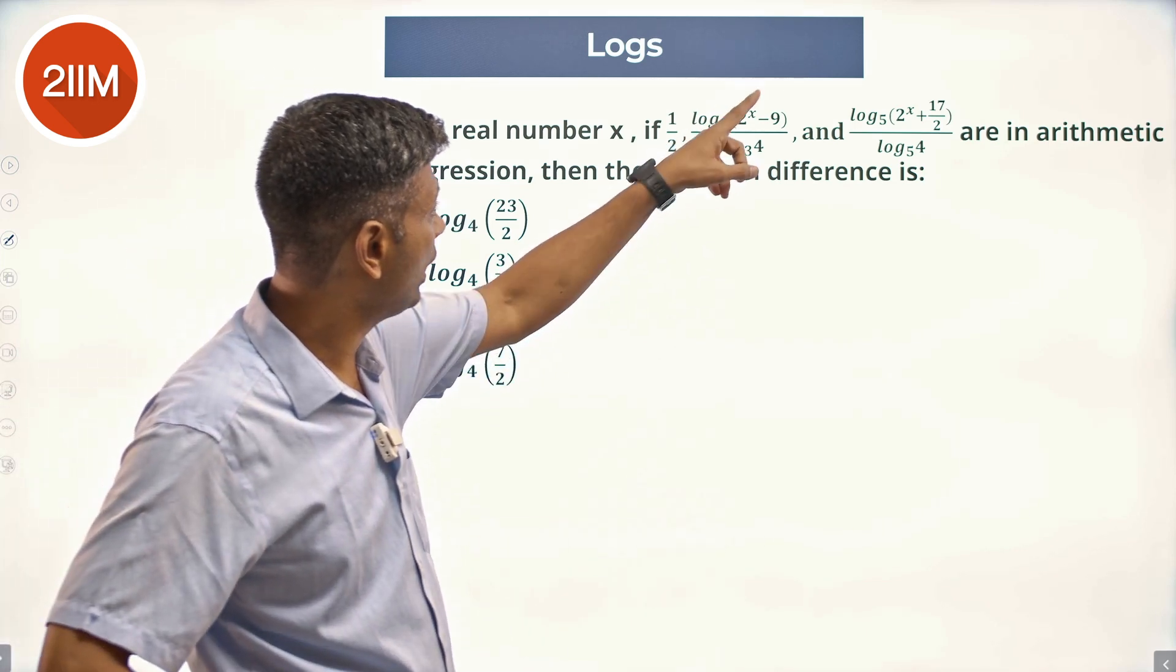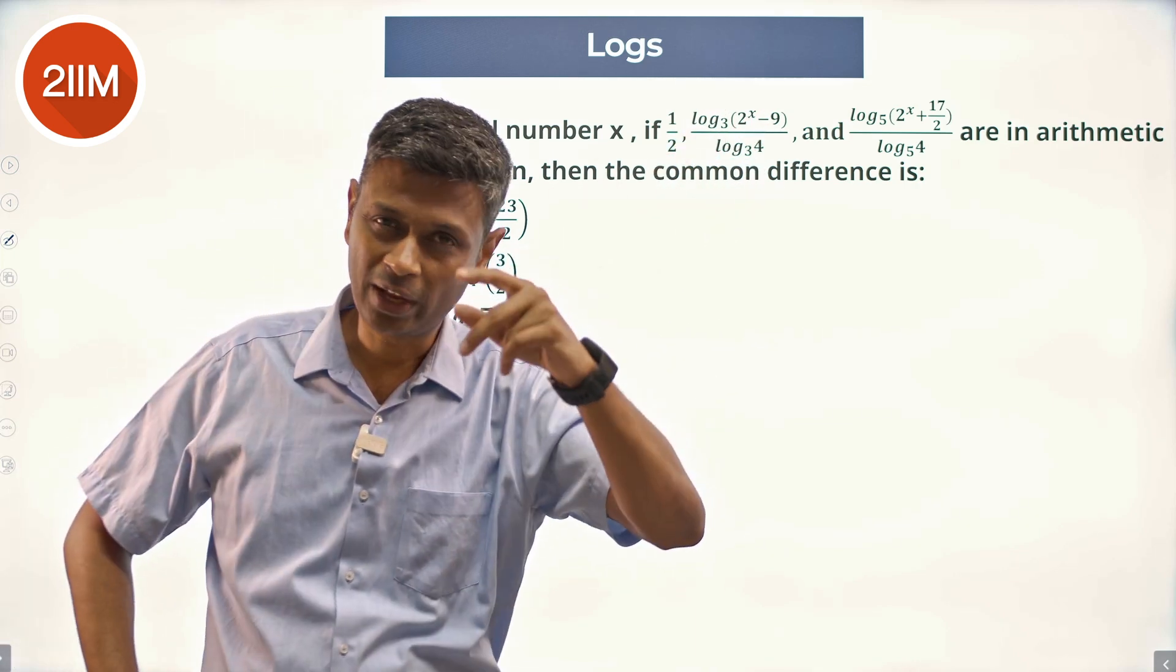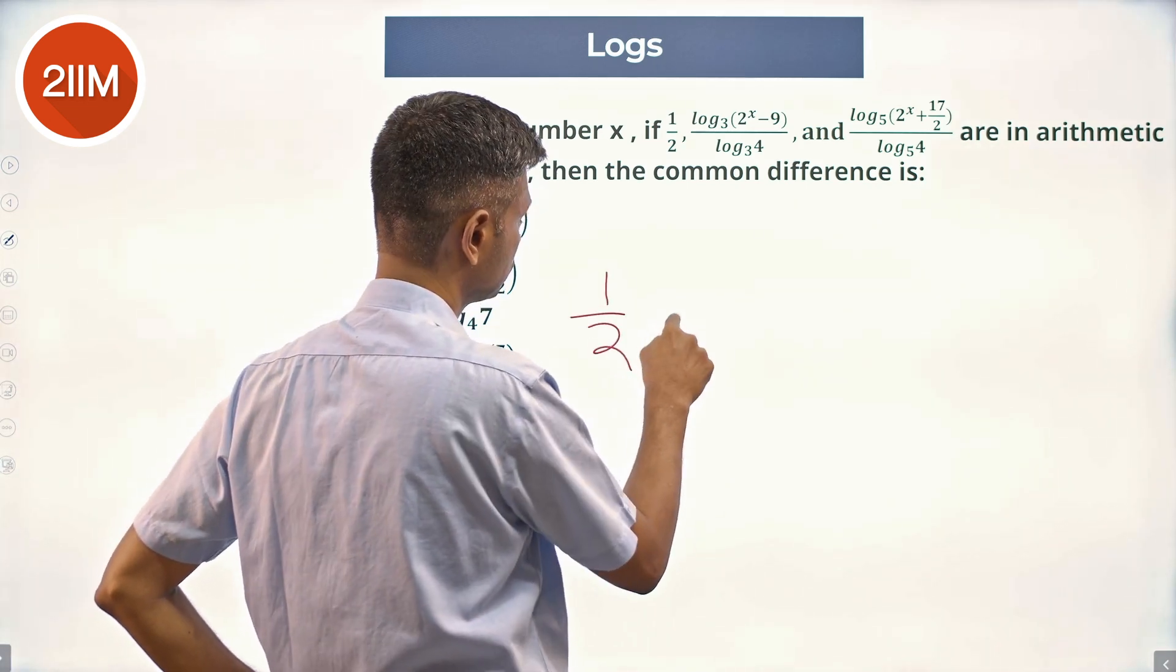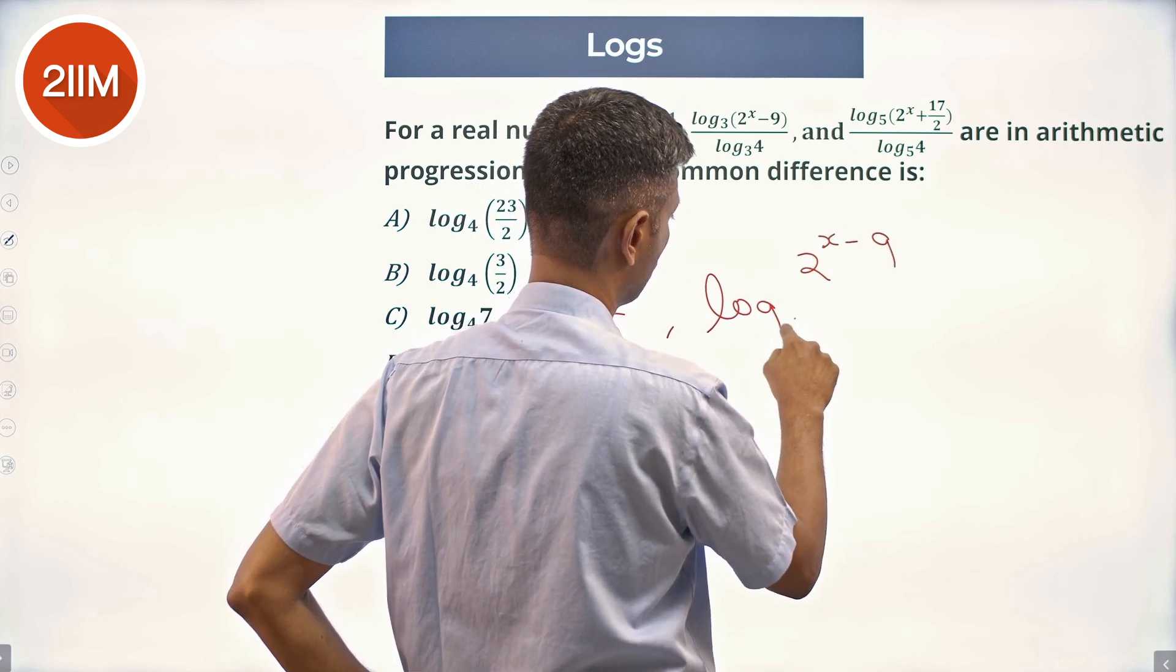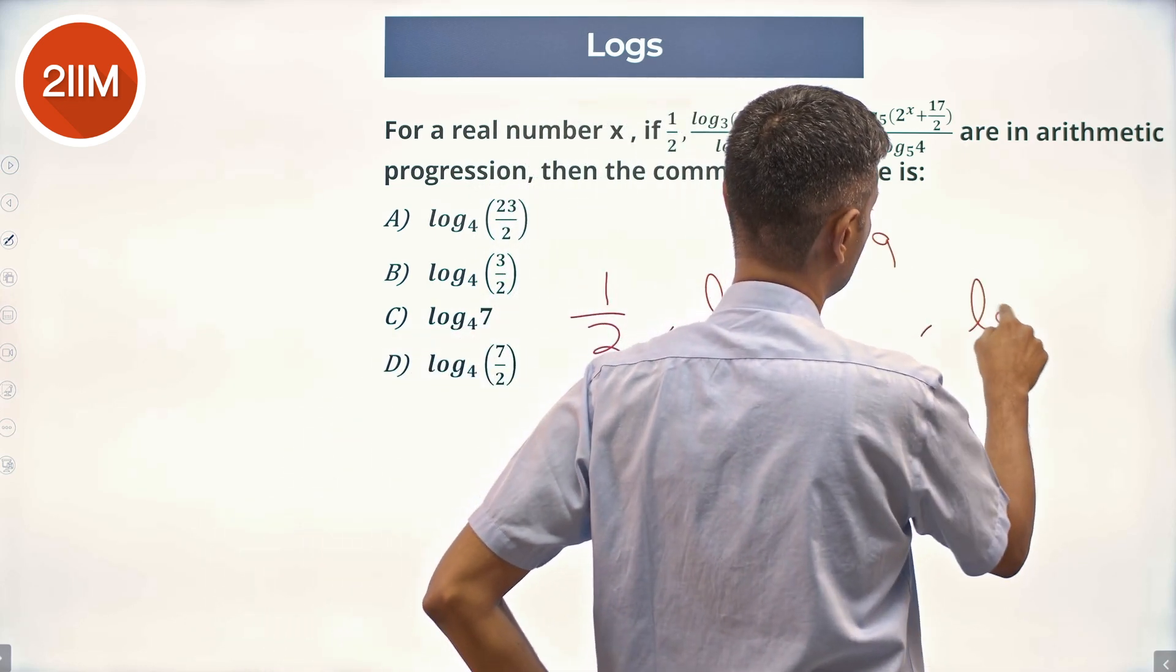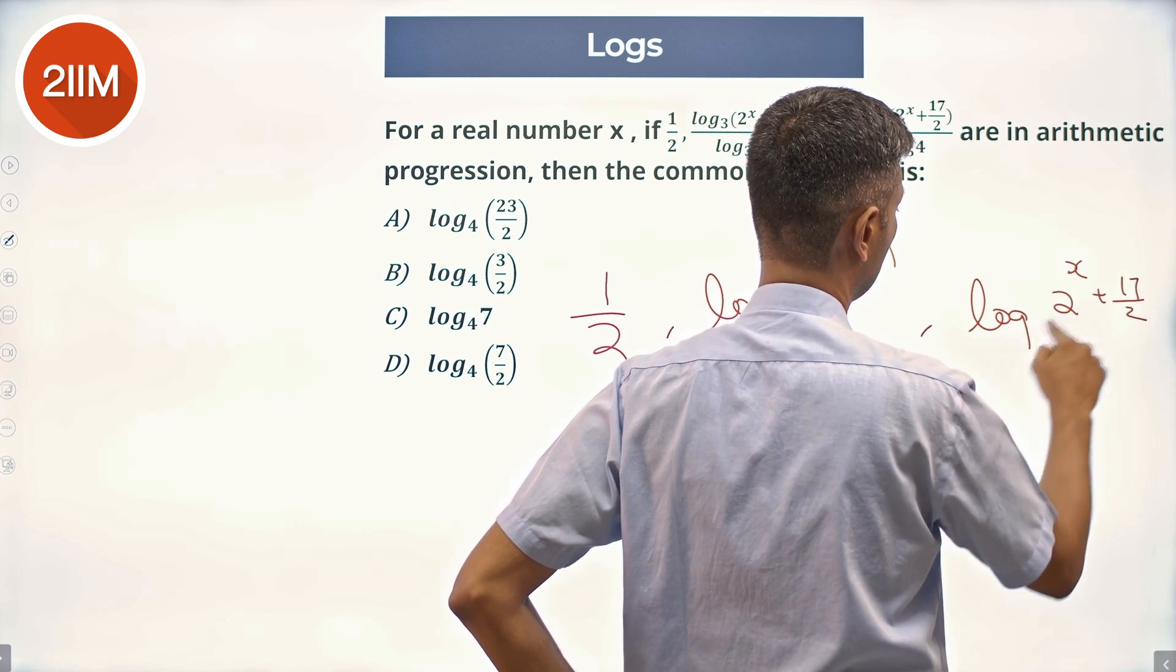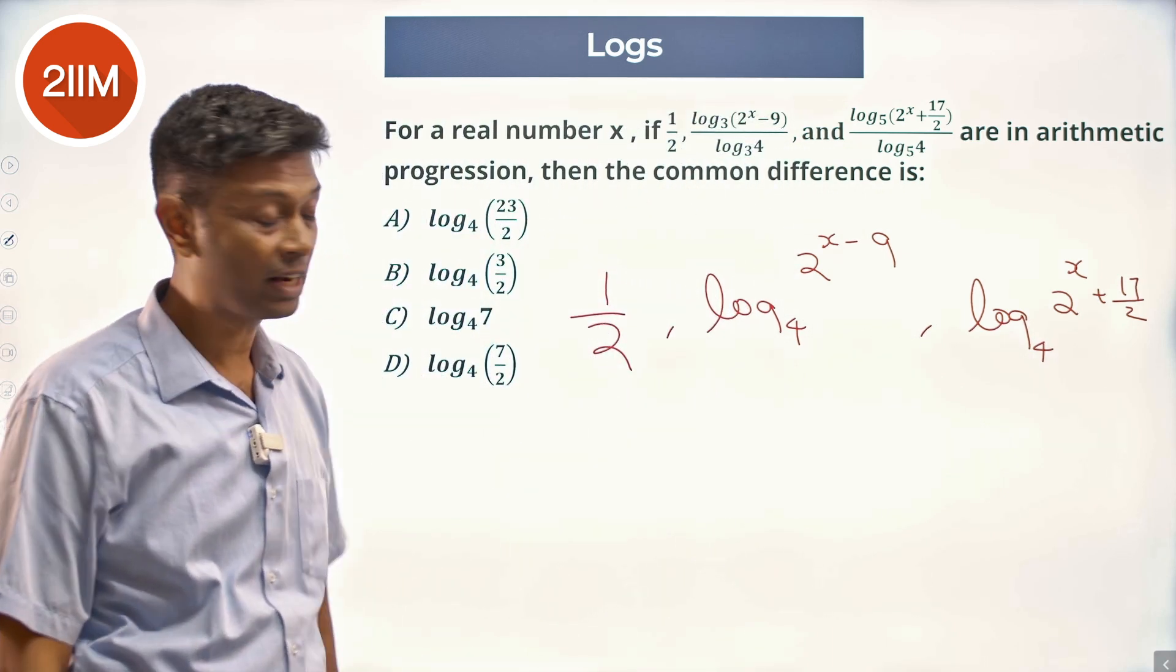First of all, (log_a b)/(log_c b) = log_a c. So I'm going to simplify this and say the terms are: 1/2, log₄(2^x - 9), log₄(2^x + 17/2). They are in arithmetic progression.